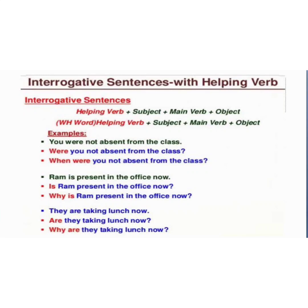Let's look at the structure of an interrogative sentence. For a yes/no question: helping verb + subject + main verb + object. In the case of a WH question, the WH word comes at the start of the sentence, then helping verb, then subject, then main verb, then object. The remaining distribution stays the same — only the WH word is placed at the start.